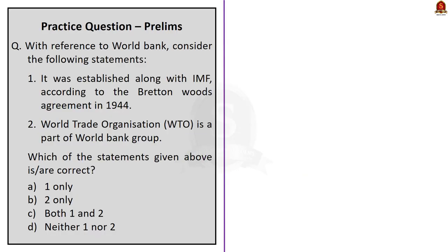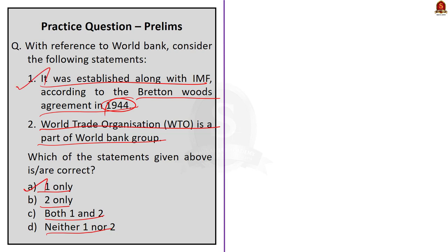Practice question 1: With reference to the World Bank, consider the following statements. Statement 1: It was established along with IMF according to the Bretton Woods Agreement in 1944. Statement 2: World Trade Organization is a part of the World Bank Group. The correct answer is Option A — Statement 1 only. Statement 1 is correct. Statement 2 is incorrect because the World Trade Organization is a separate international organization that looks after the global system of trade rules. Also note that the headquarters of the World Bank is in Washington DC, while the headquarters of the United Nations is in New York.